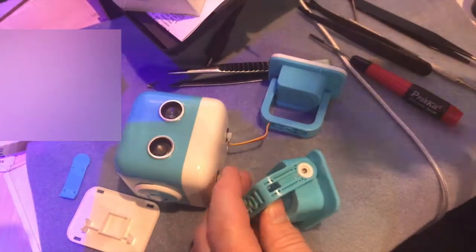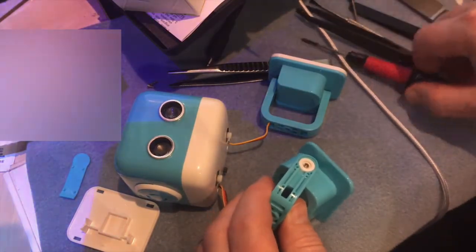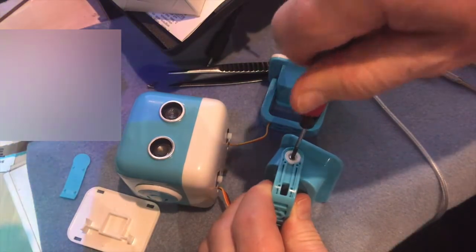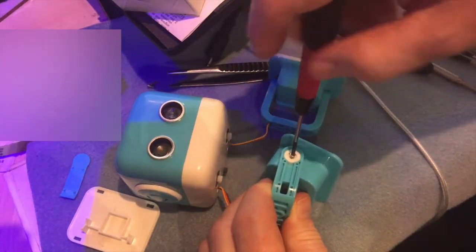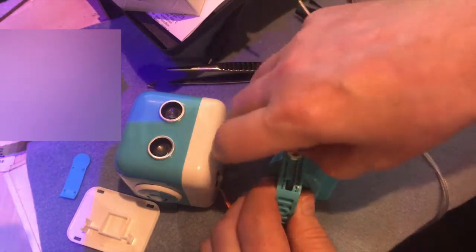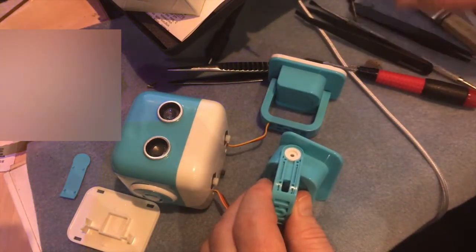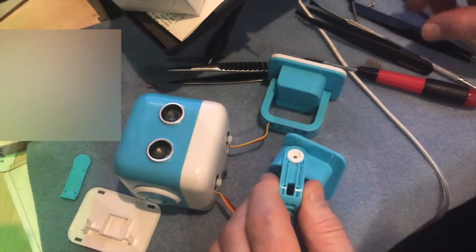Now you'll just need a small screwdriver to undo the screw that's holding the servo control cog in place. Make sure you put the screw to one side carefully. Then just applying a little bit of upward pressure to the leg will force the cog out, and make sure you put that safely to one side.